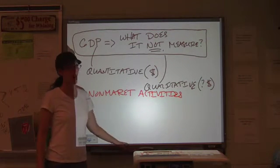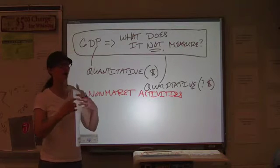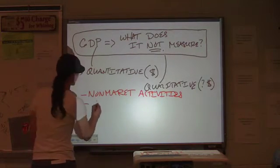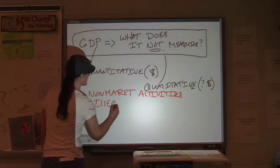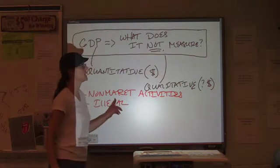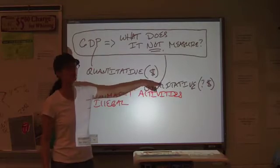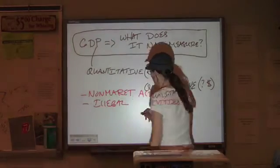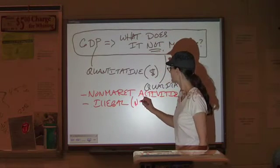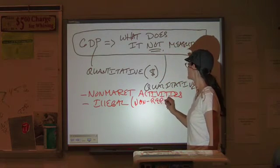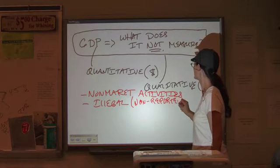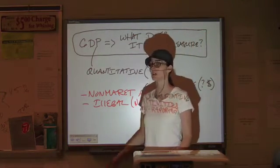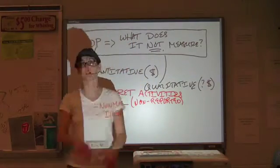Another aspect of economic activity that's not included is anything that is illegal, because we can't really put a dollar amount on something that is non-reported. We don't know about it, it didn't happen, it's not in there. You're not supposed to do it anyway, so it doesn't count.